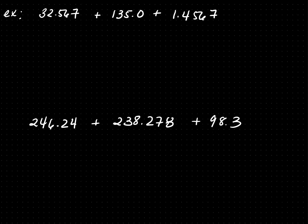In the first example, you're going to add 32.567 plus 135 plus 1.4567 in the calculator. If you do your math correctly, you should get approximately 169.0237.